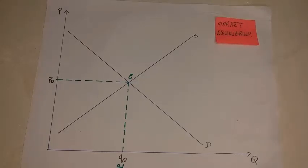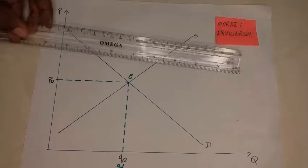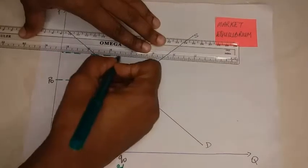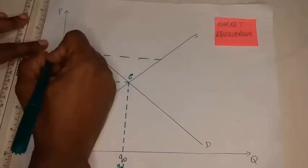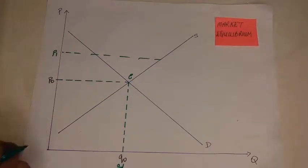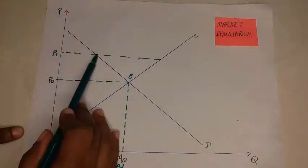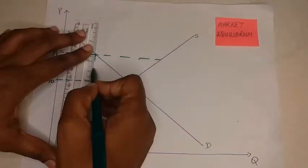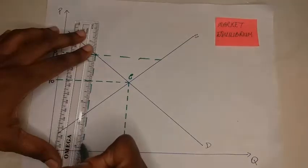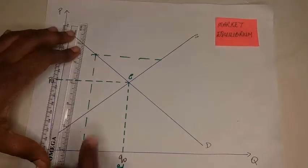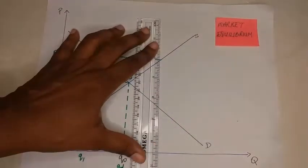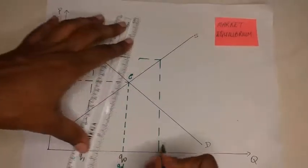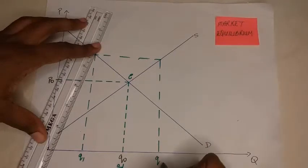But what happens in cases where we have price being above the equilibrium price, such as p1? At a price such as p1, where is quantity demanded? We have to look to see where this price cuts the demand curve, which will be at this point here — we can call this q1. And what happens to quantity supplied? We take the same price line to the supply curve — we can call this level of output q2.